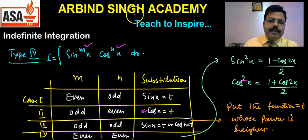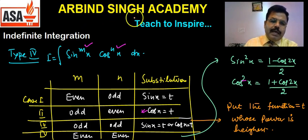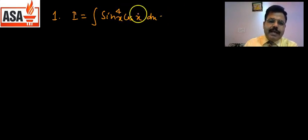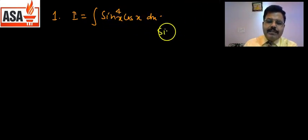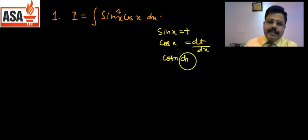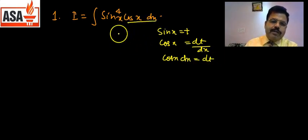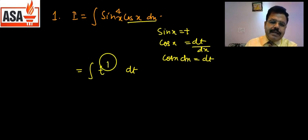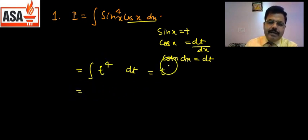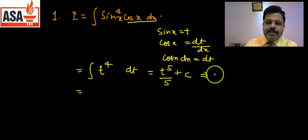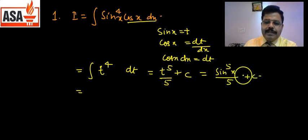First question: i = ∫sin⁴x·cosx dx. यहाँ cos का power 1 है और sin का power even है। तो sin x को t put करना चाहिए। sin x = t ⟹ cos x dx = dt। तो cos x dx के बदले dt लिख सकते हैं। sin⁴x को t⁴ लिखेंगे। Integration of t⁴ = t⁵/5 + c। t = sin x था, इसलिए answer है sin⁵x / 5 + c।